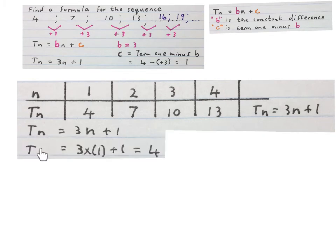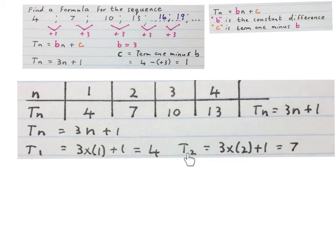So term 1 is 3 times 1 plus 1, which is 4. Term 2 is 3 times 2 plus 1, which is 7. It works.